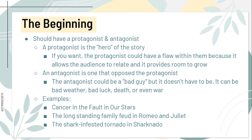For the beginning, you should have a protagonist and antagonist. A protagonist is the hero of the story. The protagonist could have a flaw within them because it allows the audience to relate and it provides room to grow. An antagonist is one that opposes the protagonist. The antagonist could be a bad guy, but it doesn't have to be — it can be bad luck, death, or even war. Some examples of an antagonist are Cancer in The Fault in Our Stars, the long-standing family feud in Romeo and Juliet, and the shark-infested tornado in Sharknado.